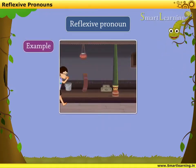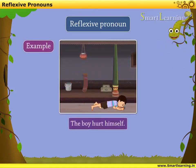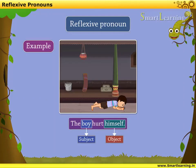First example is: the boy hurt himself. In this example, the subject is 'boy' and the object is 'himself.' Both the subject and object refer to the same person, i.e. boy. Therefore, 'himself' is a reflexive pronoun.